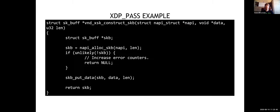Here is sample code for xdp_pass — it's actually that simple: allocate an SKB and copy data to it. This is actually the real complete code from mlx5, and remember to call xsk_buff_free afterwards. I just skipped the incrementing-a-counter detail which is also a one-liner but driver-specific.